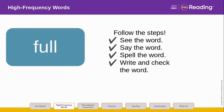Look at the letters in the word. Let's spell it. F-U-L-L. In this word, the letter U stands for the sound U. Blend the word with me. F-U-L. Full. Now write the word full. Try to write it without looking. Then check it.